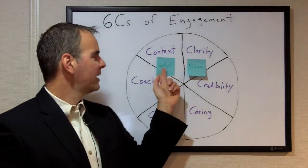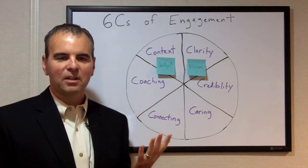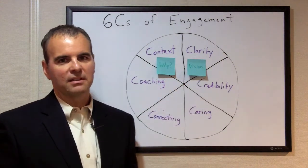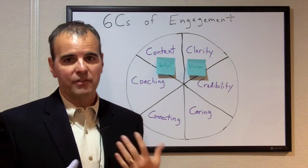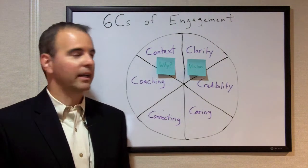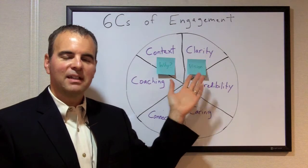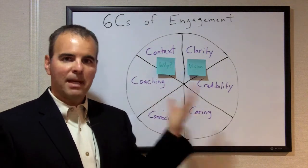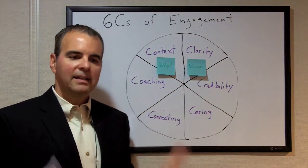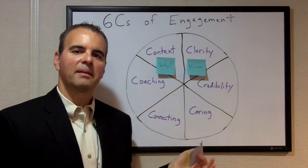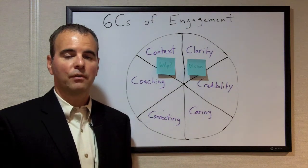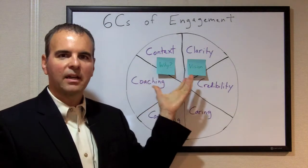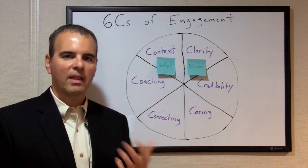You'll notice I made context and clarity the same color. That's because as a leader, we may not have a hundred percent control over what the context is and what the vision needs to be. Sometimes the context is something that's just handed to us, like the economic environment. Sometimes that vision is created by senior executives above our level of leadership, and I may not have had any input into that vision. Either way, I don't have a hundred percent control over it. But as a leader, to be effective, I do have a hundred percent control over whether I enroll in those — whether I totally own the situation and translate that for my team in a way that they can be engaged.